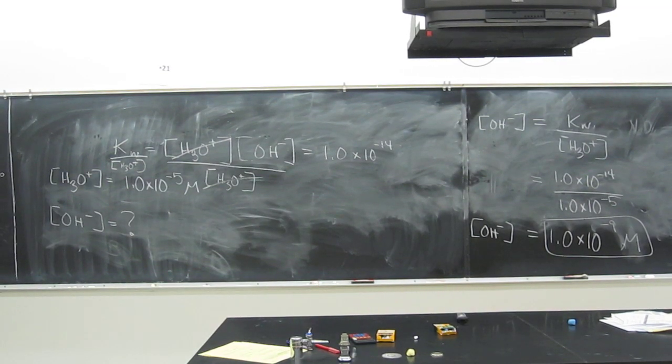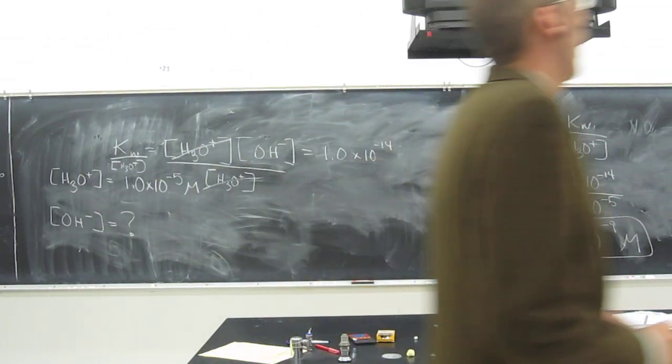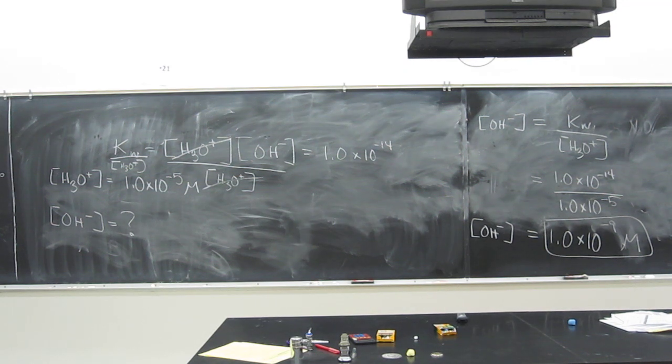So like what we were saying, if you've got a neutral solution, it's going to be at 7. An acidic solution is going to be below 7 pH, and a basic solution is going to have a pH above 7.